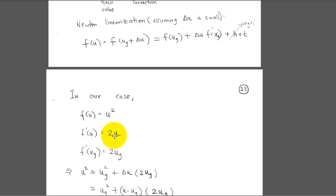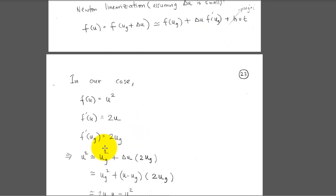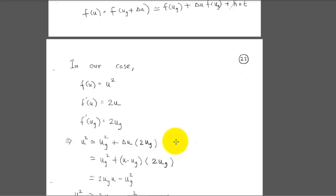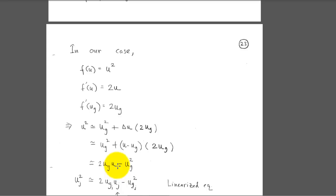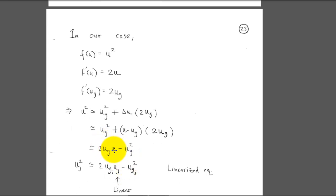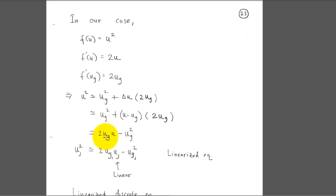So f'(u_guess) = 2·u_guess. Substituting into the Taylor expansion gives a linearized expression for u². We then substitute δu = u − u_guess and collect like terms to get the linearized expression: u² ≈ 2·u_guess·u − u_guess². On the right-hand side, u appears as a linear term because u_guess and u_guess² are known values. Evaluating at cell j, we get a linear expression in u_j.